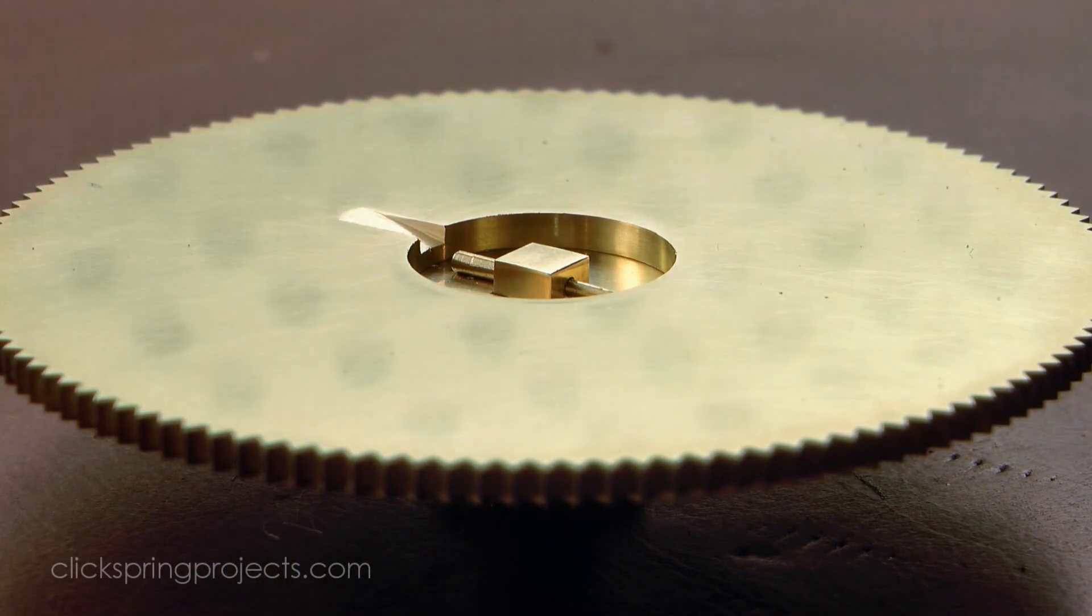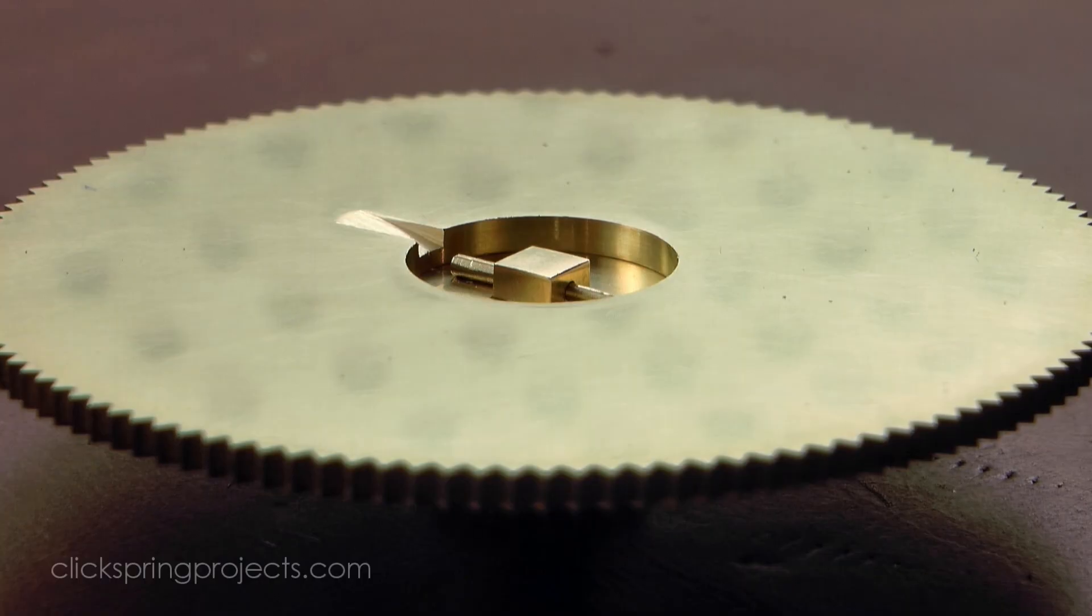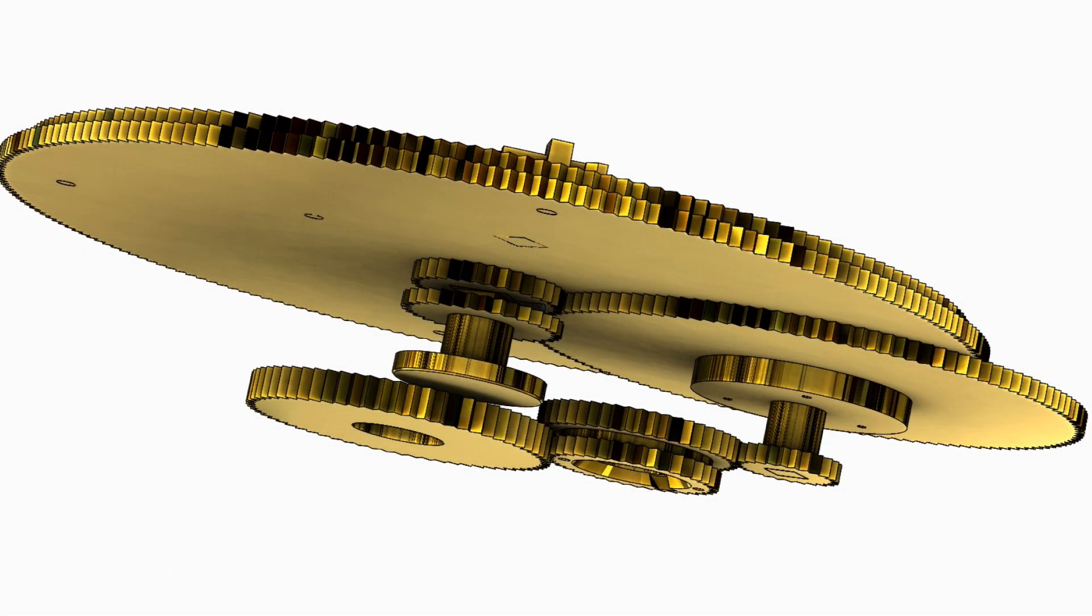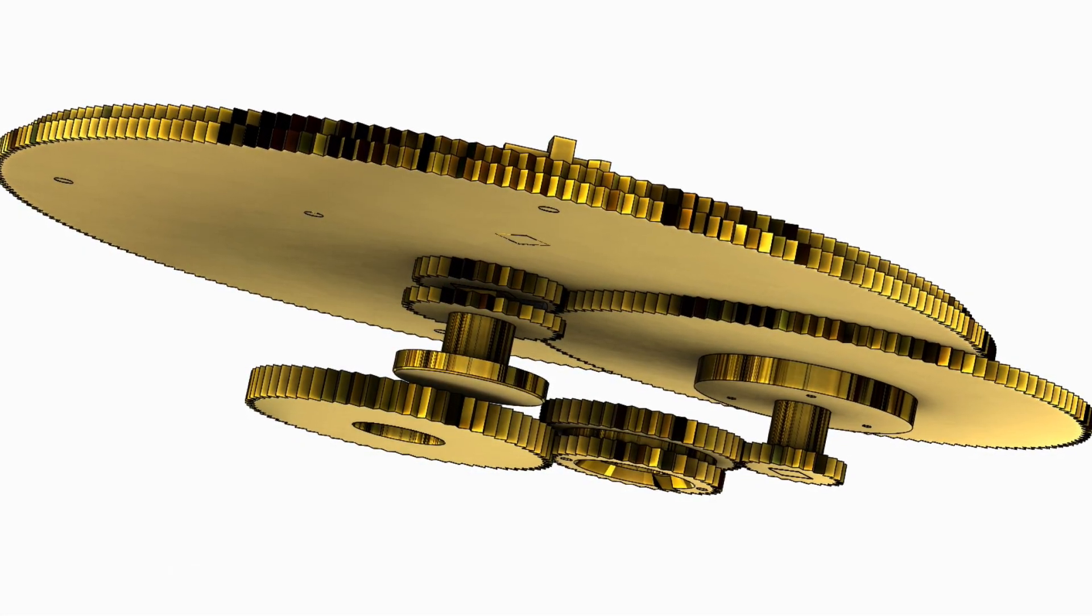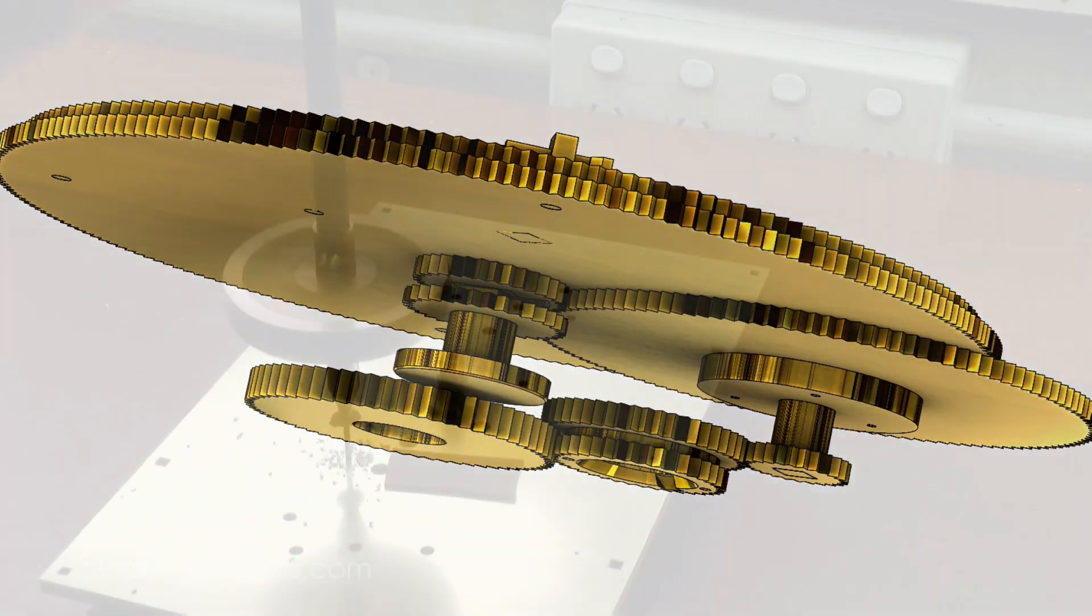Now you'll have noticed that the wheels and pinions in the mechanism are quite thin, in most cases between 1 and 2mm thick, and they obviously need to stay well meshed to function correctly.